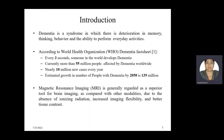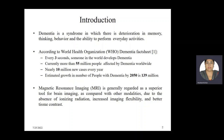Dementia is a syndrome in which there is deterioration in memory, thinking, behavior and the ability to perform everyday activities. According to the World Health Organization, dementia cases are increasing rapidly and it is predicted that by 2050, the count can go up to 139 million. Hence, there is a need for an efficient method that can predict dementia at an early stage. The modality used for research is MRI, which has advantages over other modalities like absence of ionizing radiation, increased imaging flexibility, and better tissue contrast.